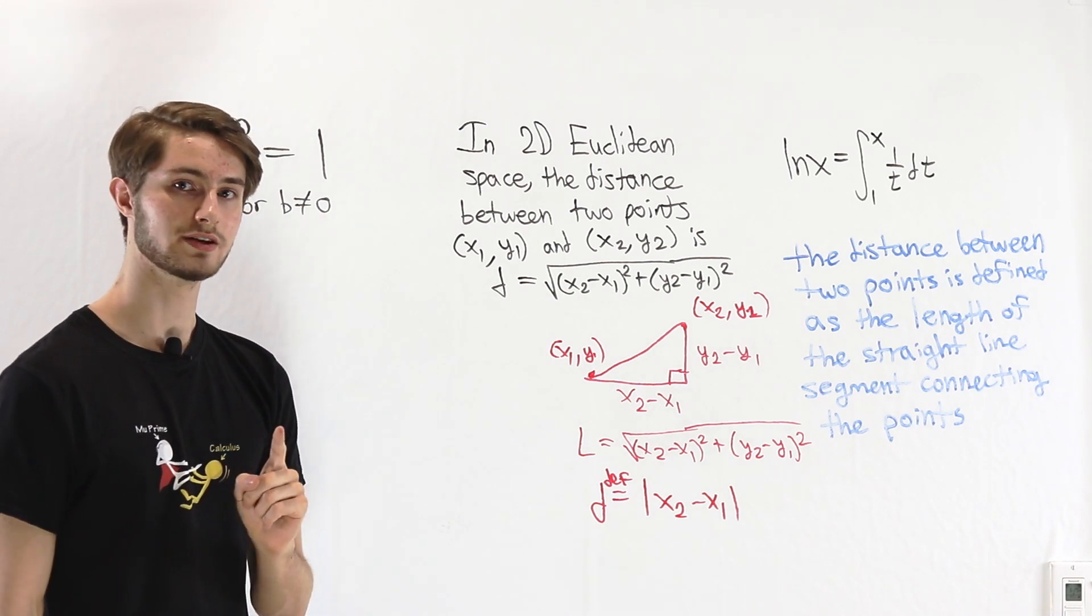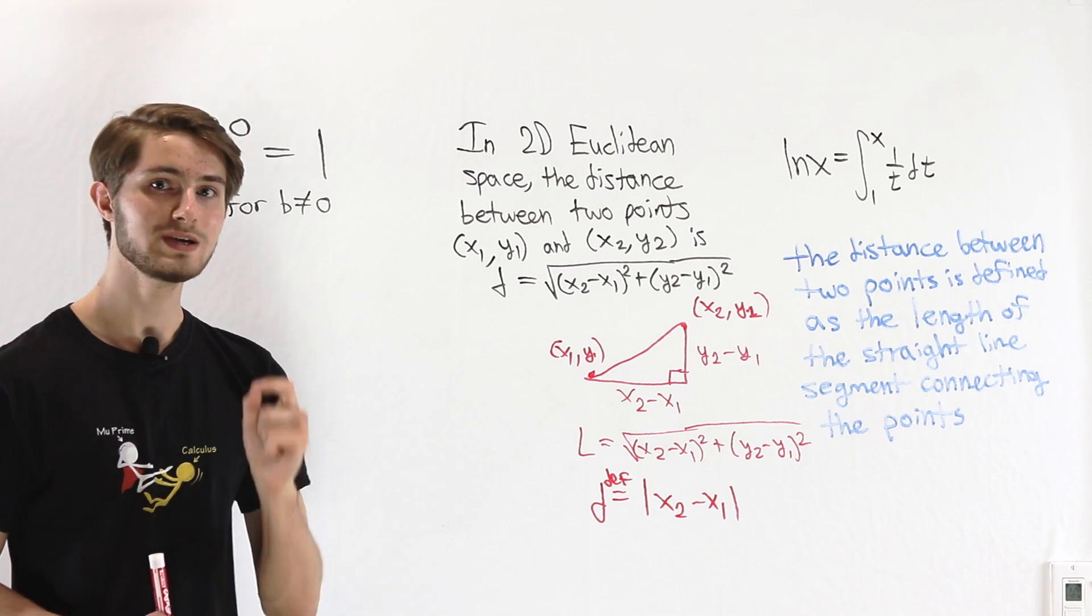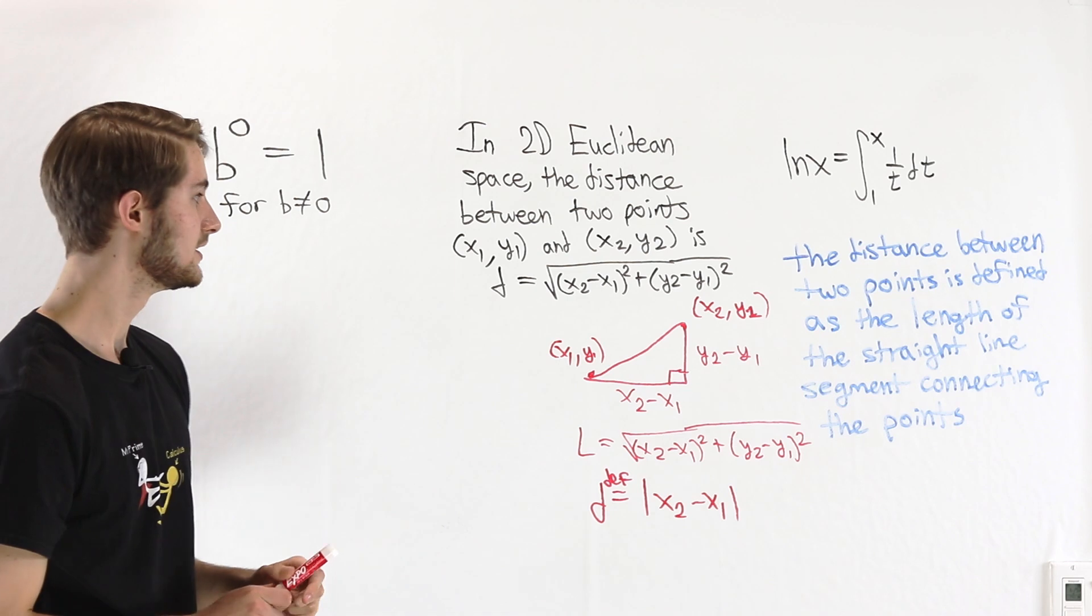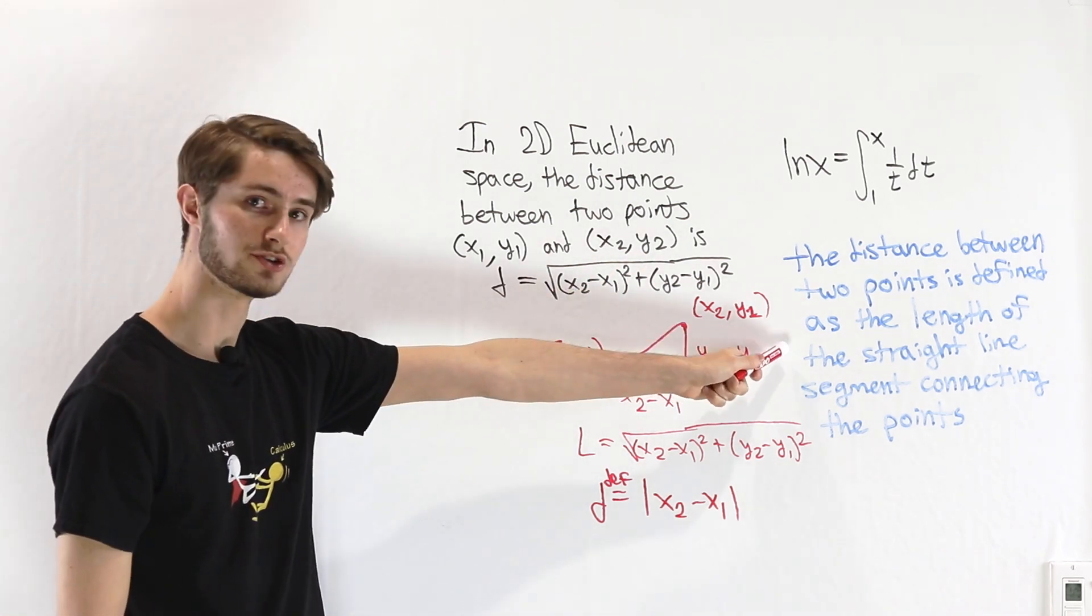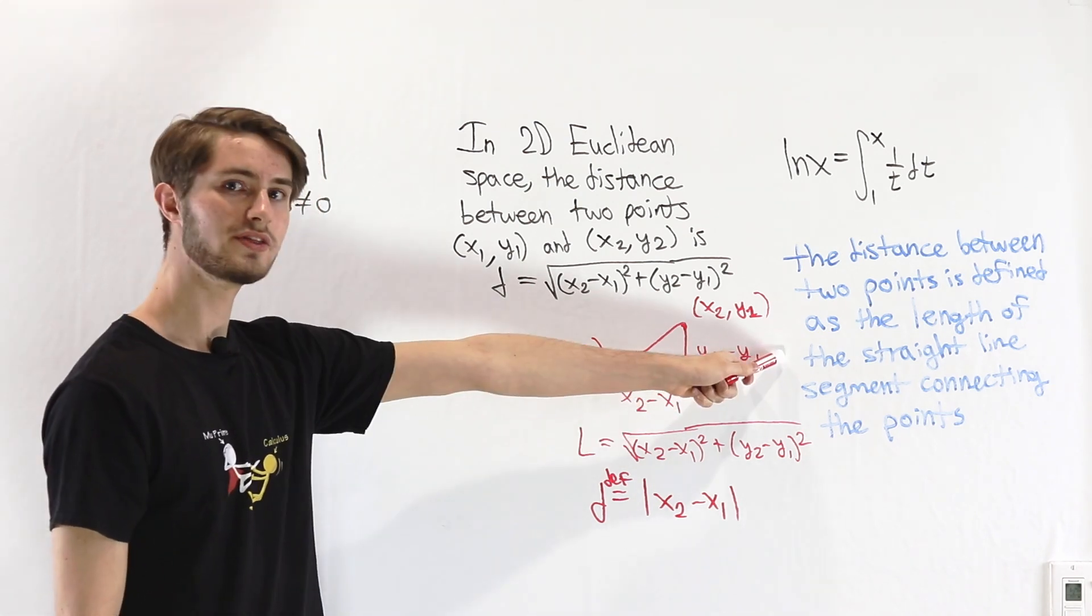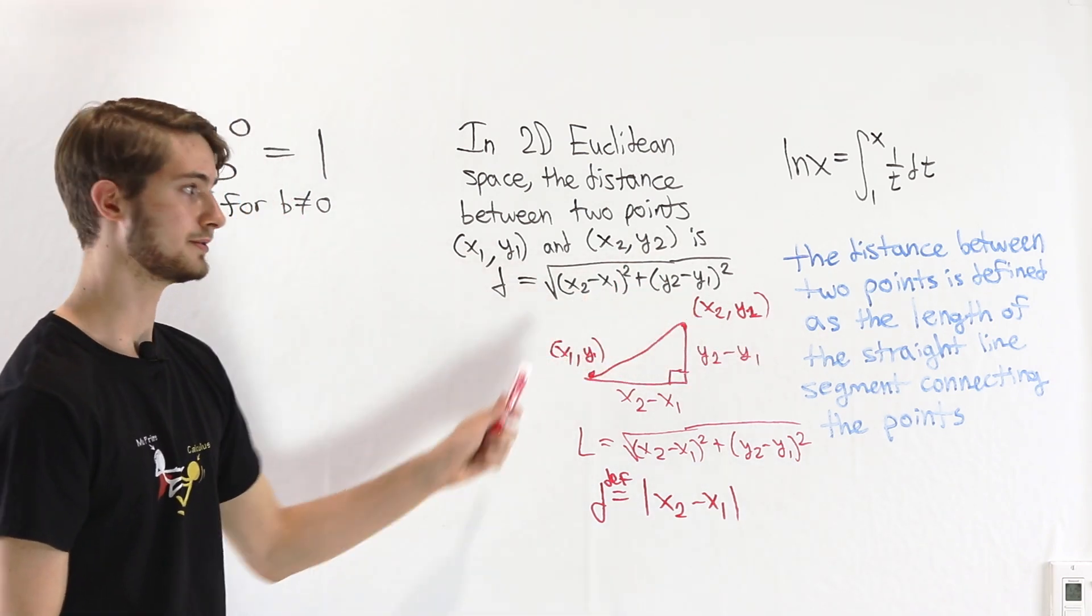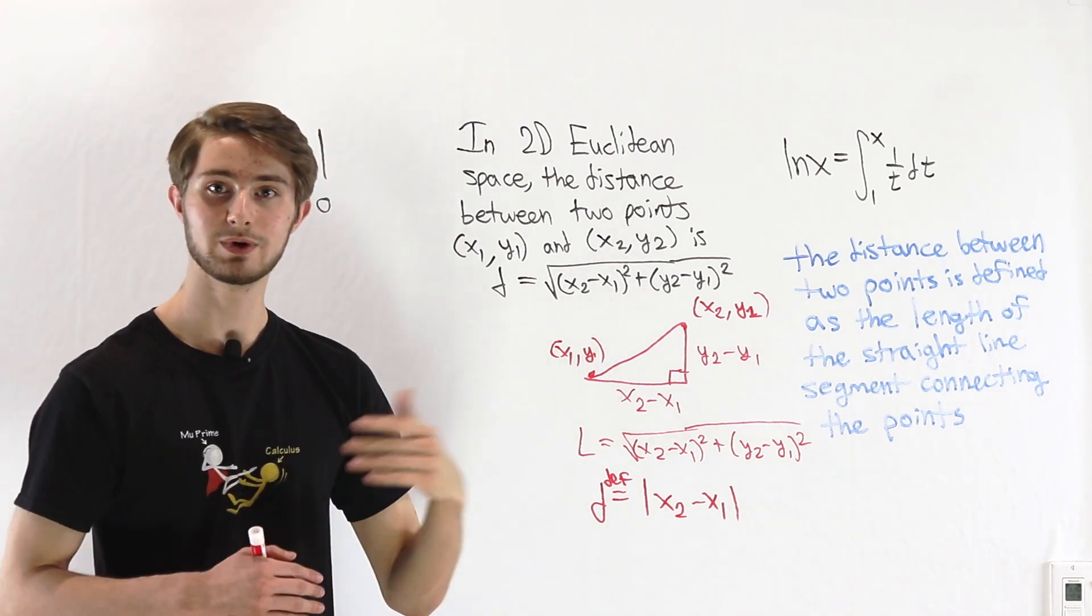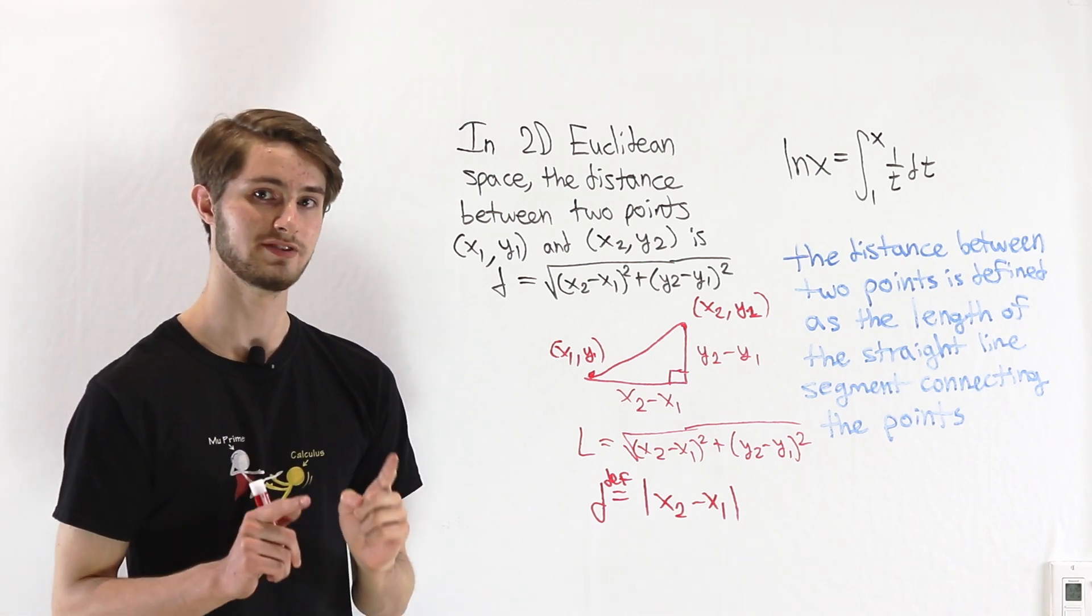There is one thing, though, that doesn't change. One thing that is always a theorem is that these two statements are equivalent. That if distance is defined as this square root function, then it is also the straight line segment connecting the two points. Or that if distance equals the length of the straight line segment, then it also equals this square root. The fact that those two give us the same result in any way that we use the idea of distance, that is a theorem no matter what our definition is.